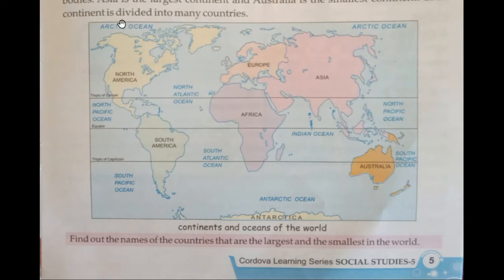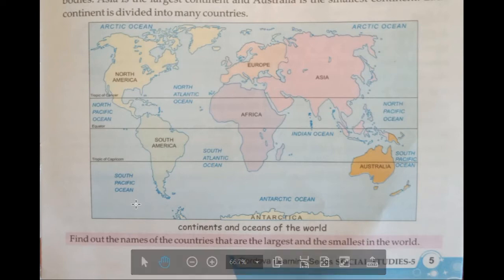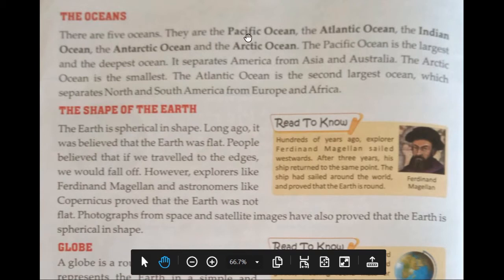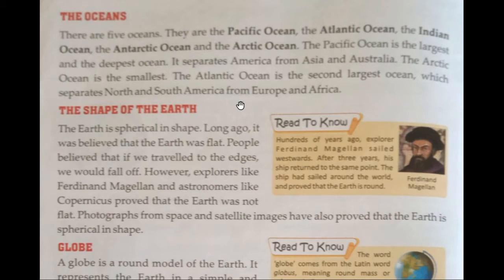Now let's see the oceans. This part has the Arctic Ocean. Under that we have the North Pacific Ocean, and over here we have the South Atlantic Ocean. Here we have the Indian Ocean, and here the South Pacific Ocean. The Pacific Ocean is the largest and the deepest ocean — it separates America from Asia and Australia. The Arctic Ocean is the smallest. The Atlantic Ocean is the second largest ocean, which separates North and South America from Europe and Africa.